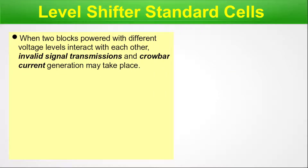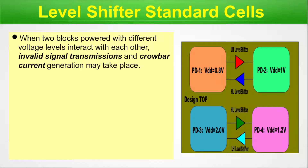When two blocks powered with different voltage levels interact with each other, invalid signal transmission and crowbar current generation may take place. In the picture we can see different power domains with LH and HL level shifters. LH means low to high — when a signal goes from VDDL to VDDH — and HL means high to low. The naming depends on the relative VDD values of the two communicating domains.